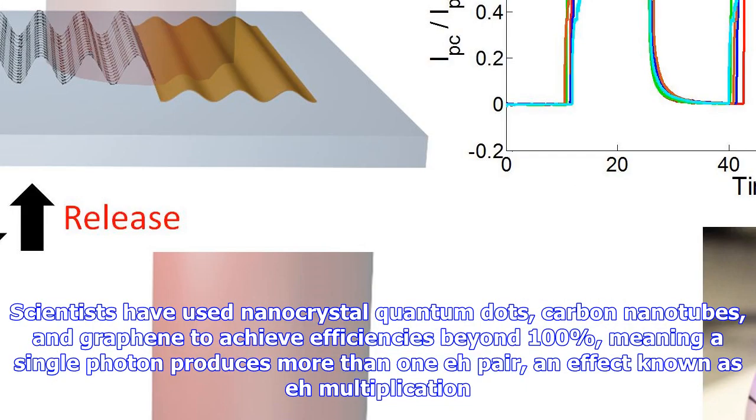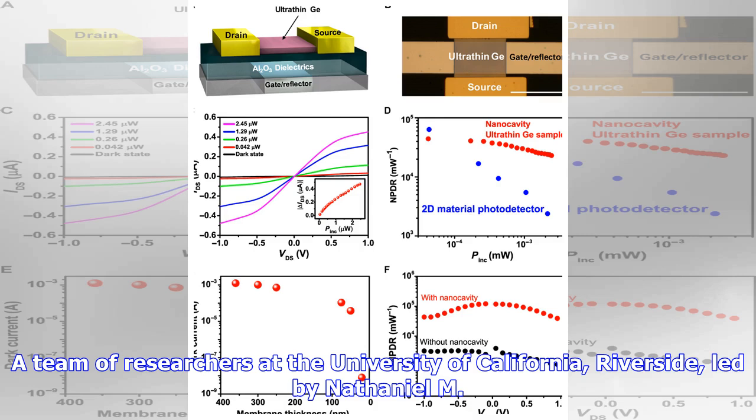One way to improve this efficiency is to shrink the materials down to the nanoscale. Scientists have used nanocrystal quantum dots, carbon nanotubes, and graphene to achieve efficiencies beyond 100%, meaning a single photon produces more than one pair, an effect known as exciton multiplication.